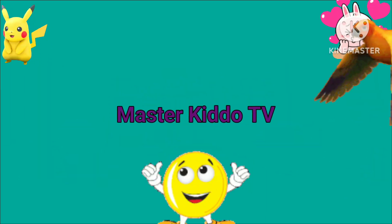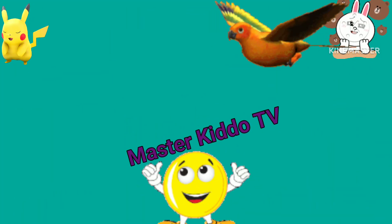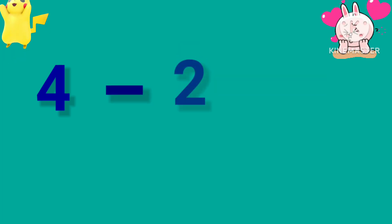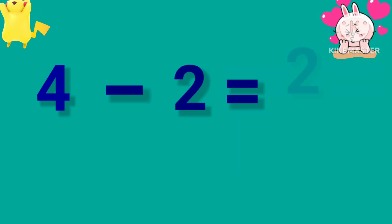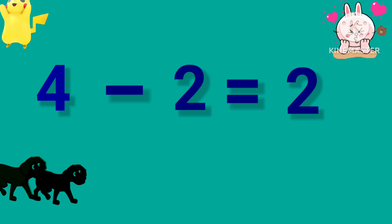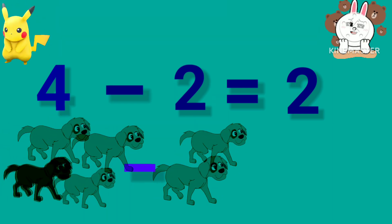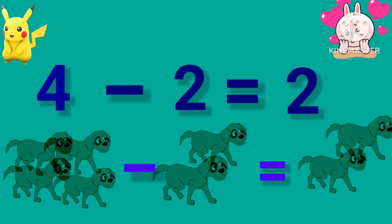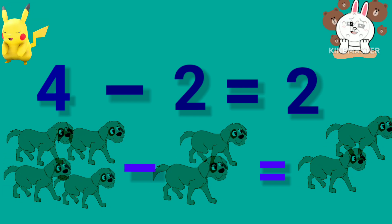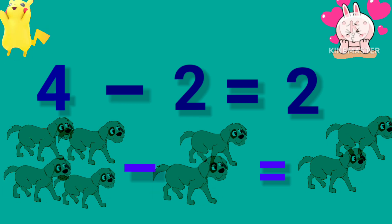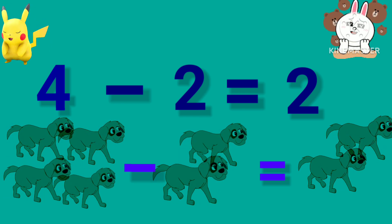4 minus 2 is equal to 2. We have 4 dogs minus 2 dogs — the answer is 2 dogs. So 4 minus 2 equals 2.